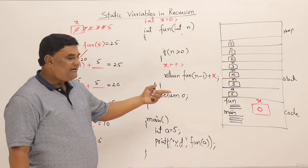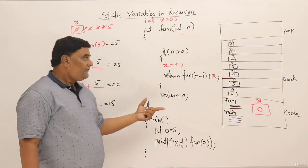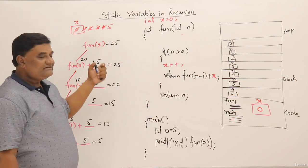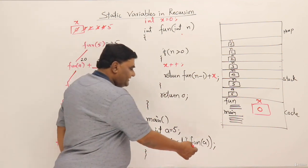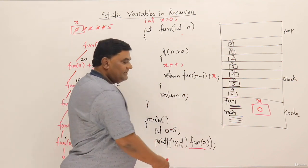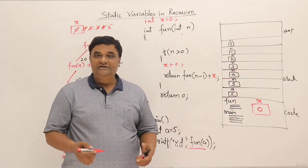So in the previous example without static, the result was 15. But now with static variable x for n=5, the result is 25. In printf, the result printed will be 25. In coming examples, we will use recursive functions with static variables.